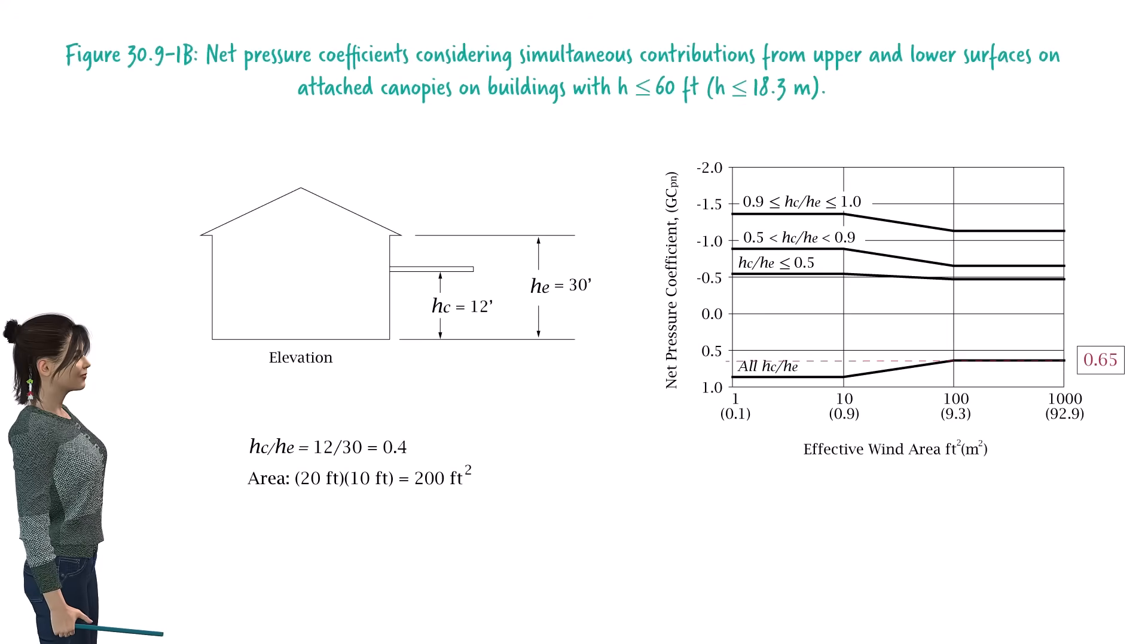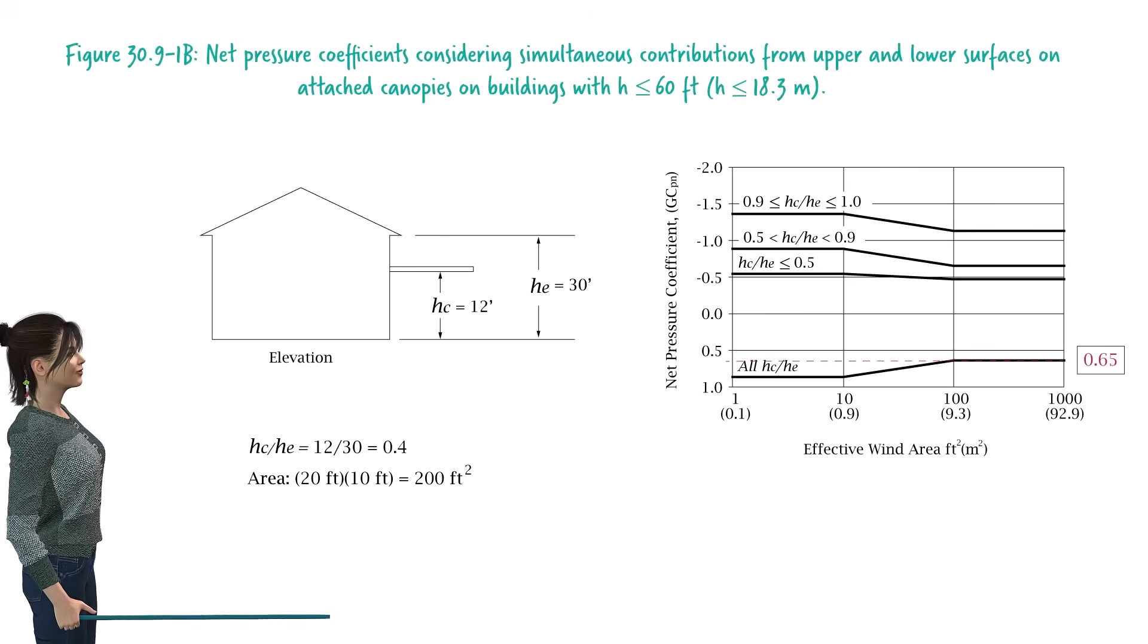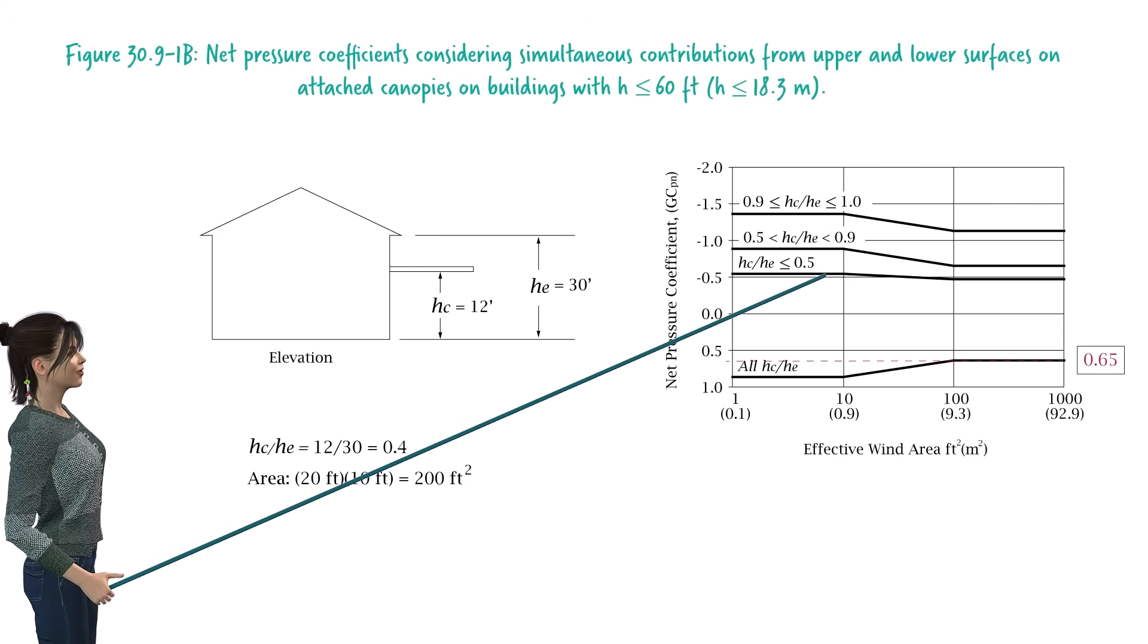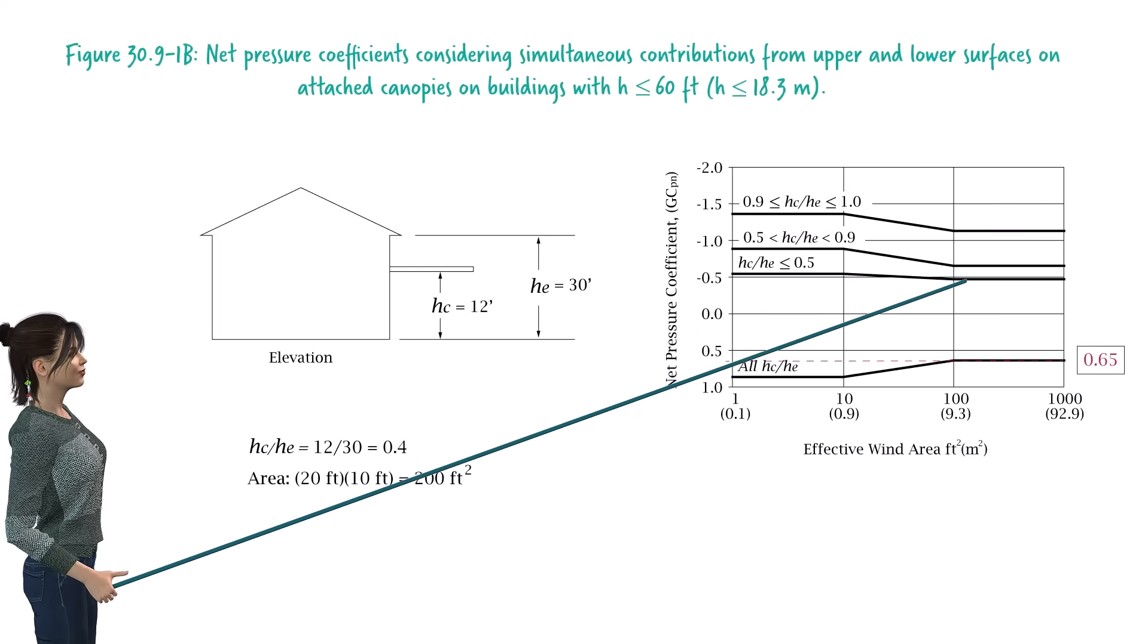To determine the negative coefficient, since our H_C to H_E ratio is 0.4, we need to use this line. For an area of 200 square feet, we can use a coefficient of negative 0.5.